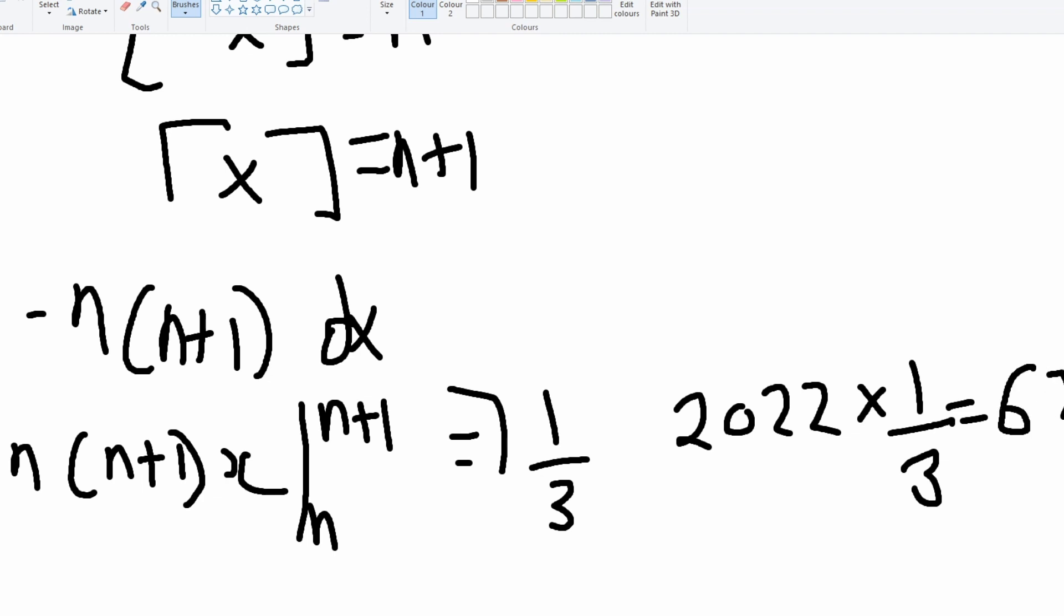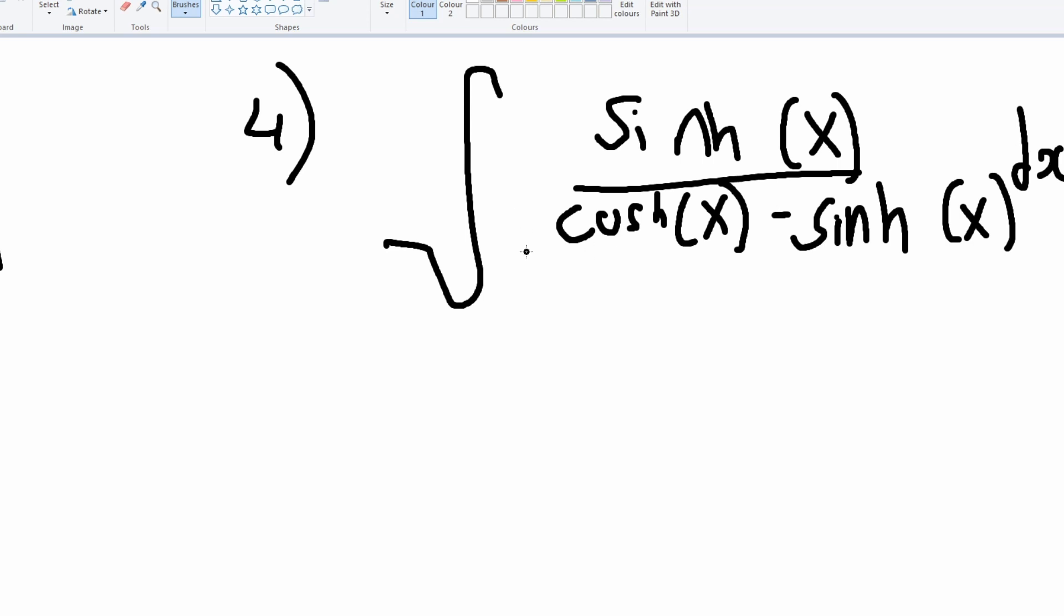So here's question four: the integral of sinh of x divided by cosh of x minus sinh of x with respect to x. The first thing we can do is change this integral into this exponential function.